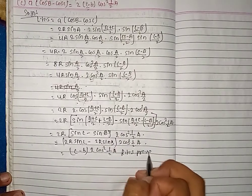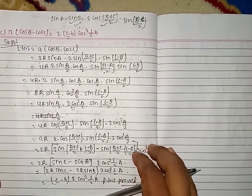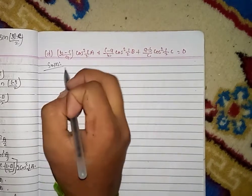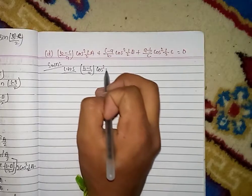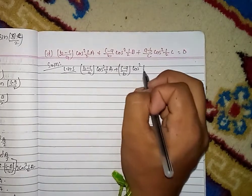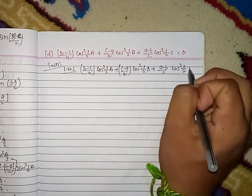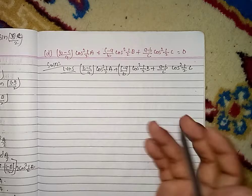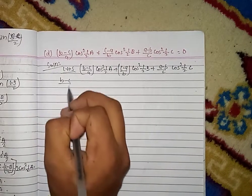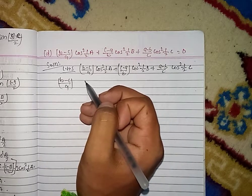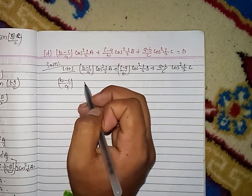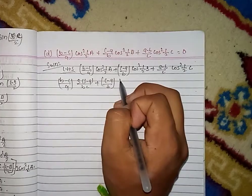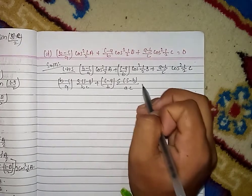So I will state the difficulty of the difficulty. I am going to write LHS here. LHS: (b−c)/a·cos²(A/2) + (c−a)/b·cos²(B/2) + (a−b)/c·cos²(C/2). I am going to write LHS. LHS: (b−c)/a·cos²(A/2) minus b divided by c.